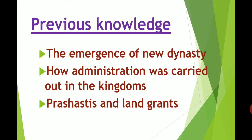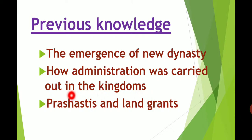In the last video, we discussed three main points. First, the emergence of new dynasty. Next, how administration was carried out in the kingdoms. And the third, Prashastis and land grants. These three points we discussed in detail in the last video. Now let's begin with a new point and that is warfare for wealth.